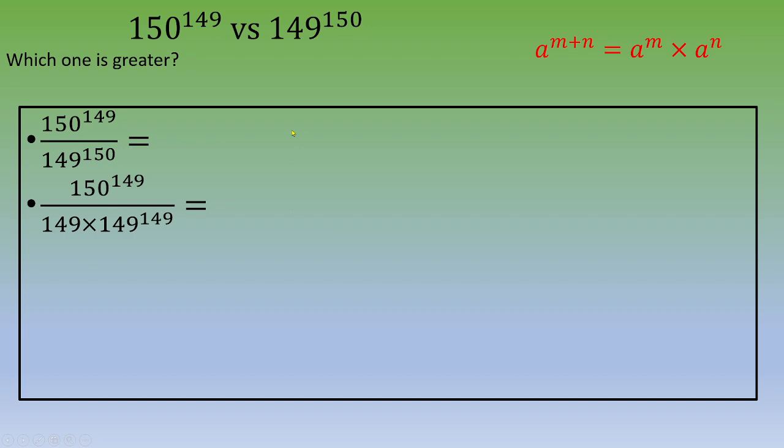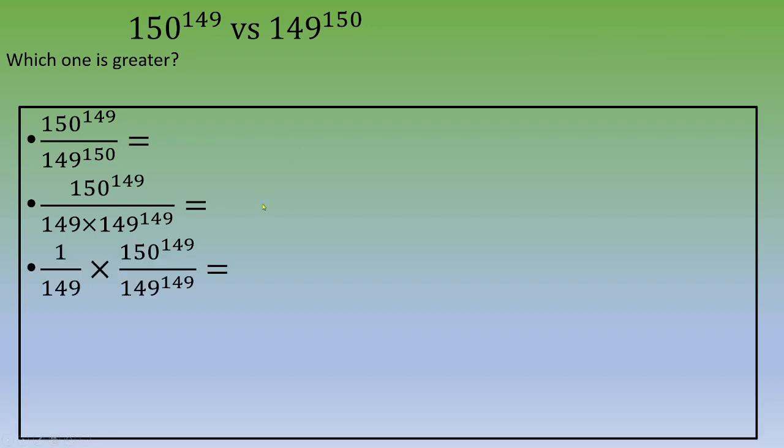Now we can split and we can get 1 over 149 times 150 power 149 over 149 power 149. Now the second member is composed of two numbers with the same power.